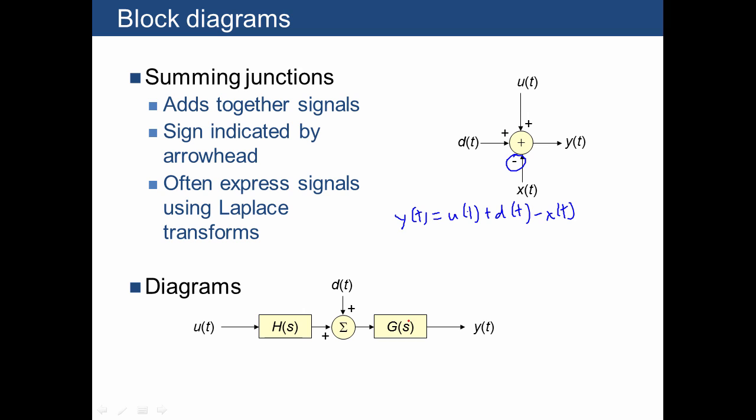Let's apply that to the diagram for this system, where we know that this output is going to be H of S multiplied by the Laplace transform of the input. So U of T, the Laplace transform is U of S. So we know that the output here is just H times U. Similarly, we'll add that in here. So then we know that the signal here is H times U plus D of S, where we're just taking the Laplace transform of that signal.